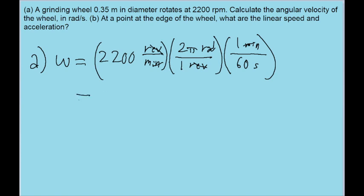If we put this into our calculator, we find an angular velocity of about 230.4 radians per second. So that is the angular velocity of the grinding wheel.